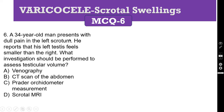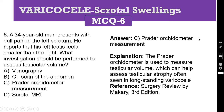Coming to MCQ 6: a 34-year-old man presents with dull pain in the left scrotum. He reports that his left testis feels smaller than the right. What investigation should be performed to assess testicular volume? A, venography; B, CT scan of the abdomen; C, Prader orchidometer measurement; D, scrotal MRI. The correct answer is C, the Prader orchidometer measurement. The Prader orchidometer is used to measure testicular volume, which can help assess testicular atrophy, often seen in long-standing varicocele. Reference is Surgery Review by McGregor, 3rd edition — a book containing many case-based scenarios.